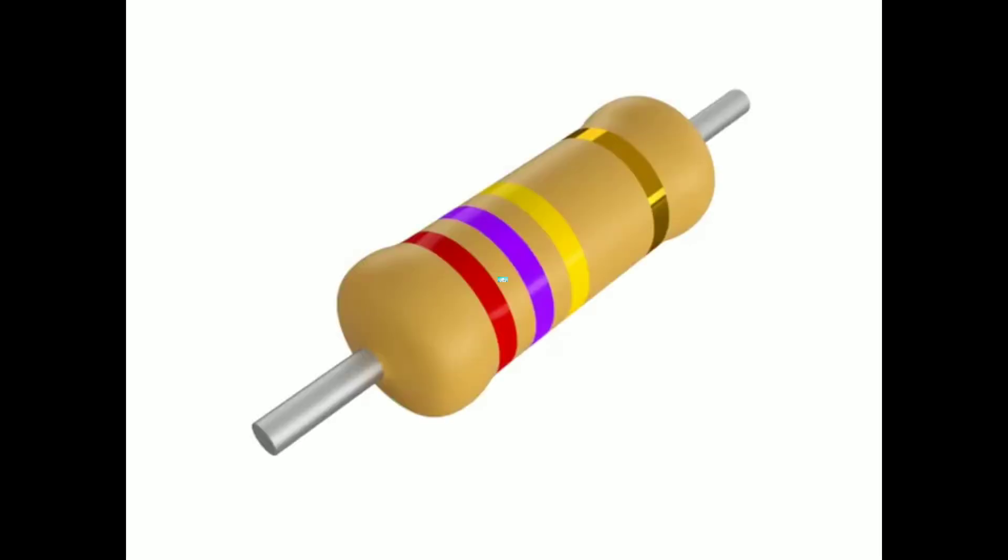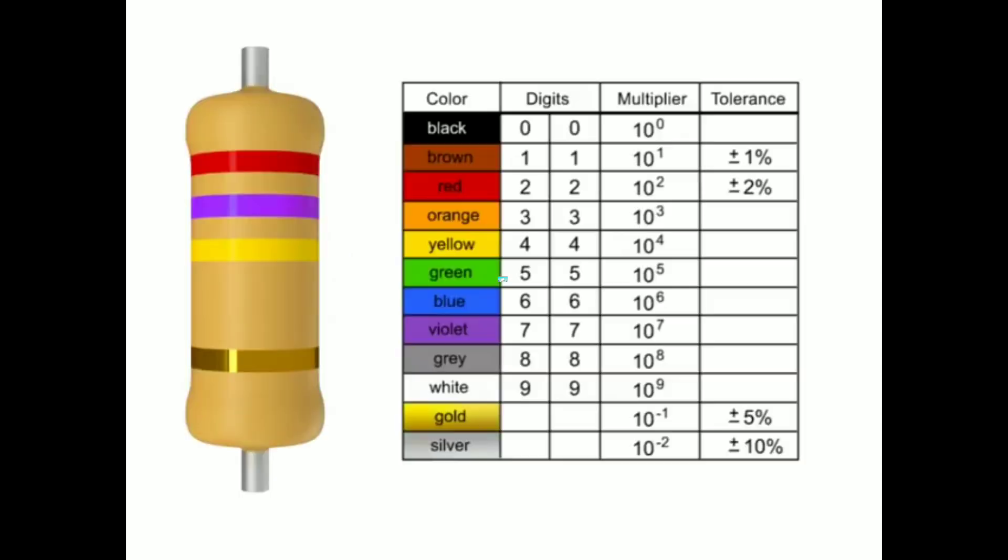Resistors are color coded with markings or bands that allow you to quickly identify resistance values and tolerance. Using a color chart table will allow you to determine the value of any common four band resistor. Memorizing this color chart will enable you to become proficient at quickly decoding and using resistors.